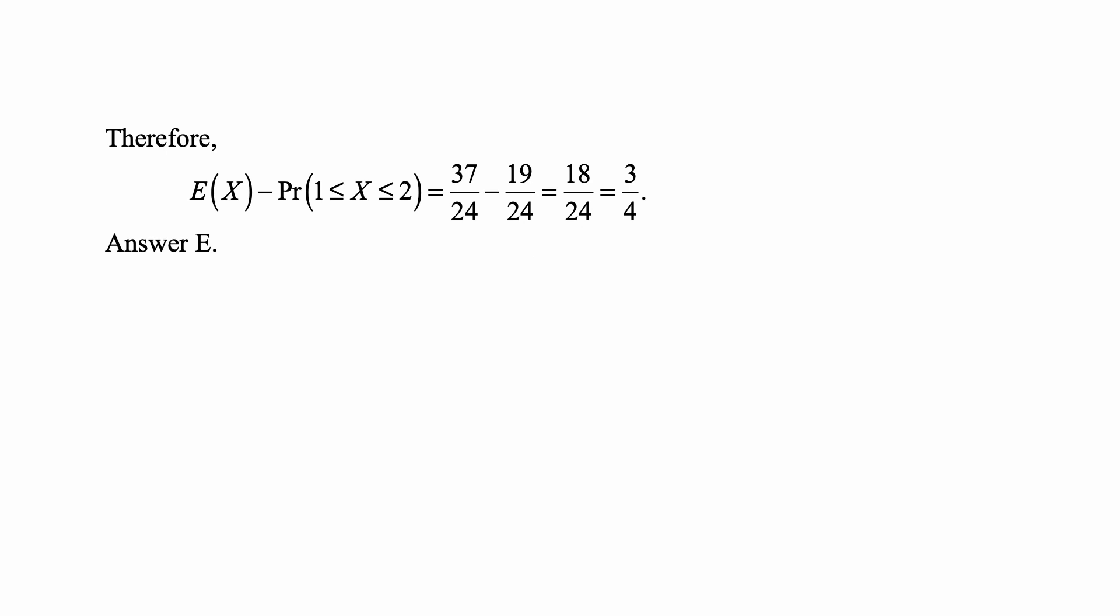And therefore, the expected value of X minus the probability that X is between 1 and 2 inclusive is equal to 37 over 24 minus 19 over 24. That's 18 over 24, and that's the same as 3/4. Because we can divide 18 by 6 and 24 by 6, so both the numerator and the denominator. If we divide it by 6, we get 3/4. That's answer E.